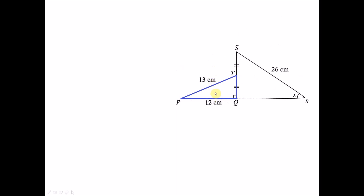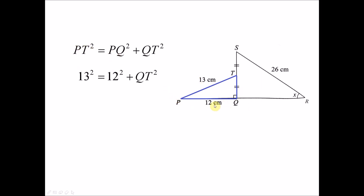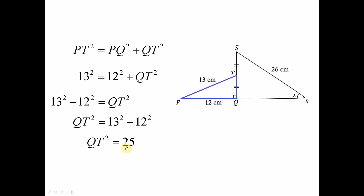Referring to the small blue triangle, since it is a right angle triangle, we use Pythagoras theorem to find QT. PT is the hypotenuse, so PT squared equals PQ squared plus QT squared. Filling in the values: PT is 13, PQ is 12, so QT squared equals 13 squared minus 12 squared equals 25. The square root of 25 gives QT equals 5. Because of the equal-side marker, TS also equals 5.